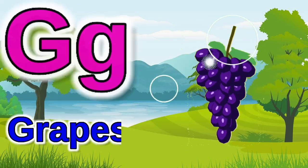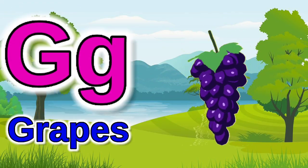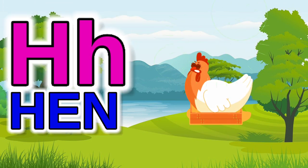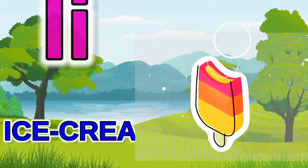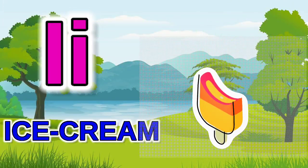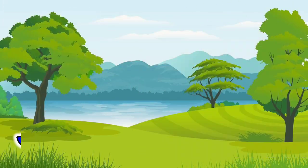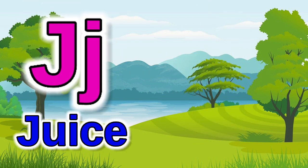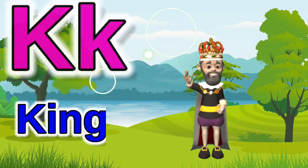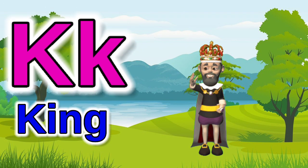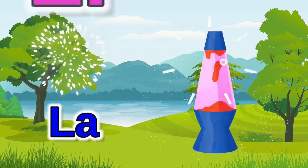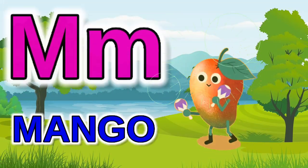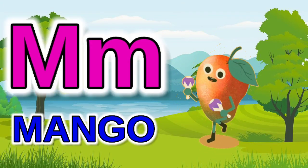G for grapes, H for hen, I for ice cream, J for juice, K for king, L for lamb.